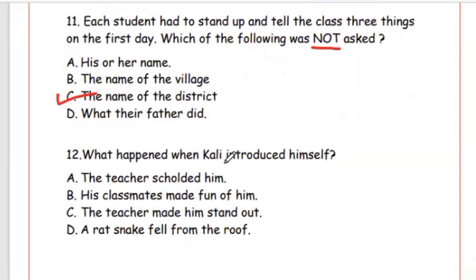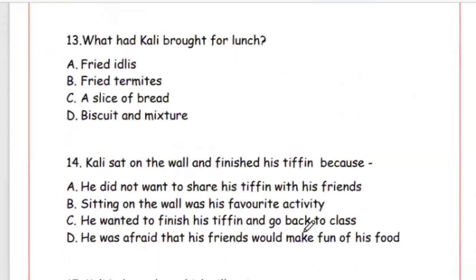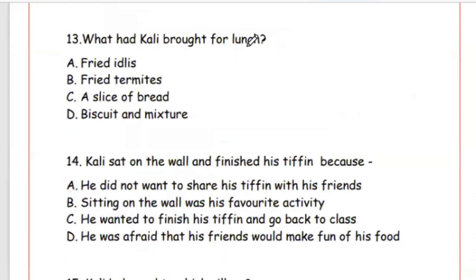Question 12: What happened when Kali introduced himself? His classmates made fun of him — Option B. Question 13: What had Kali brought for lunch? Option B, fried termites (bhuja hua dimak).